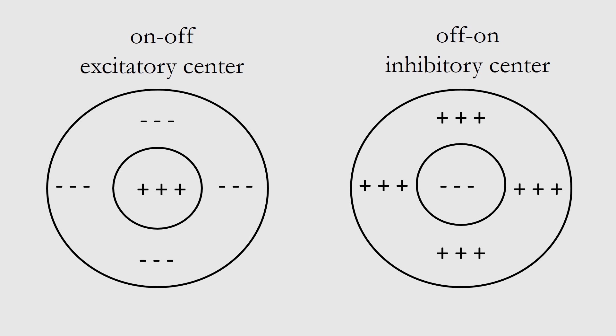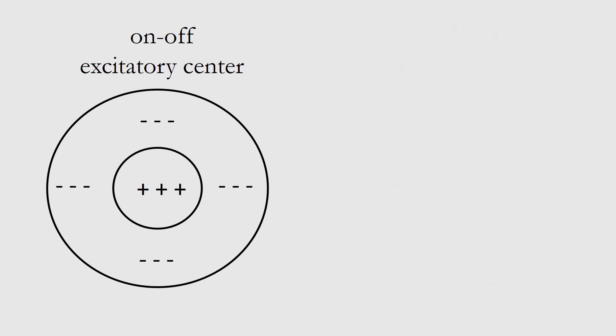For the rest of this video what I really want to do is just focus on one of these, which is the on-off excitatory center. But keep in mind this happens throughout the retina with all these ganglion cells that are both of these different kinds. I'm just going to simplify it by focusing on this one.